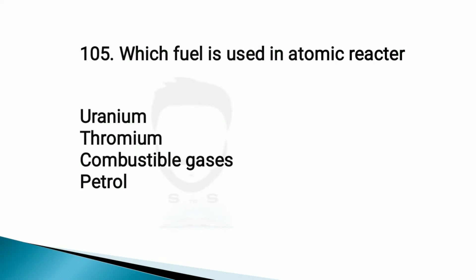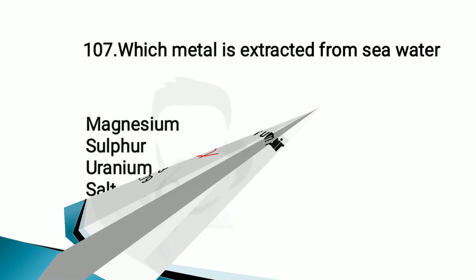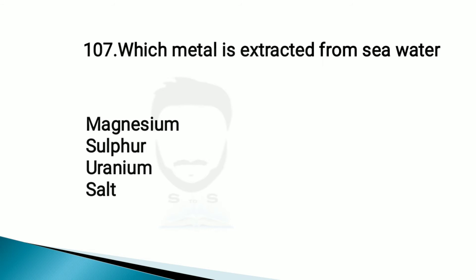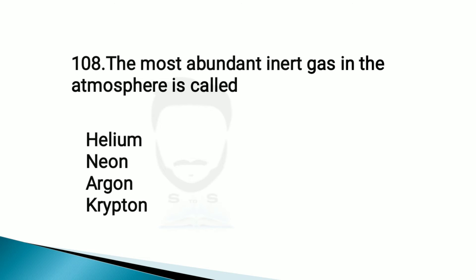Which fuel is used in an atomic reactor? Uranium. The isotope of uranium used in an atomic reactor is Uranium-235. Which metal is extracted from seawater? Magnesium. The most abundant inert gas in the atmosphere is Argon.